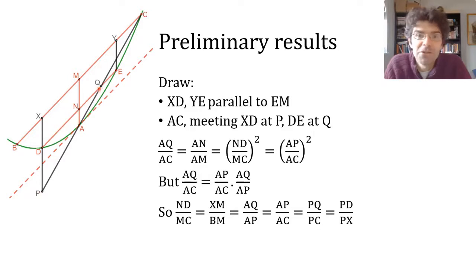But because triangles PQD and PCX are similar, that is also equal to PD to PX. So we've got lots and lots of equations. When we put them all together, the key one for us is that XM to BM turns out to be equal to PD to PX. And if we subtract each of those from one, we get BX to BM equals XD to XP. And that's true for any D and therefore for any X.